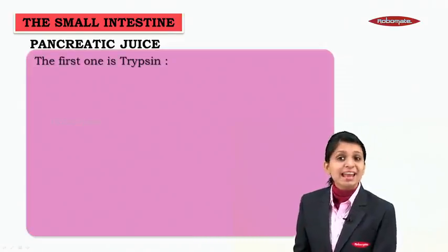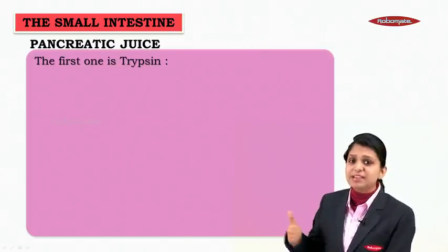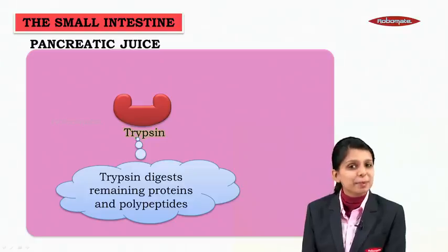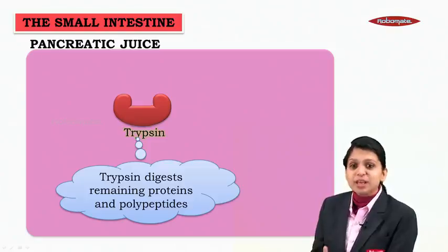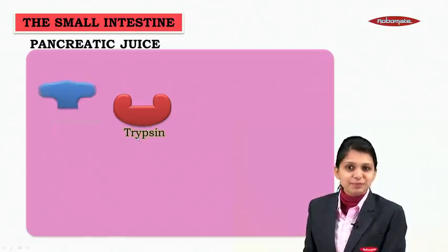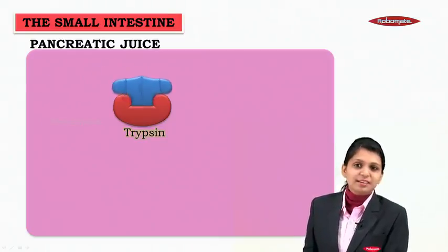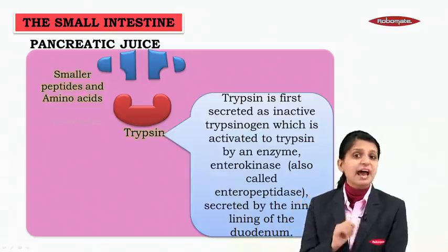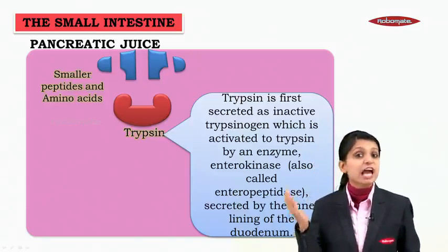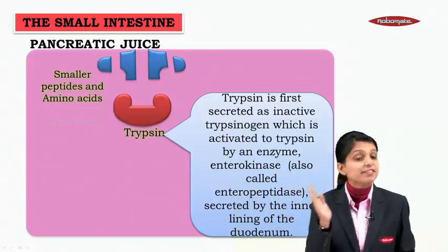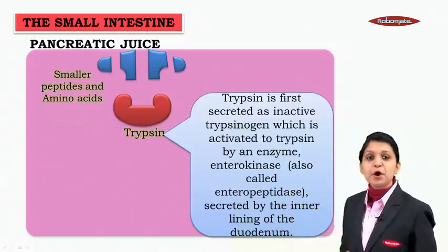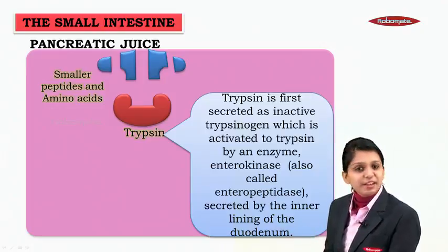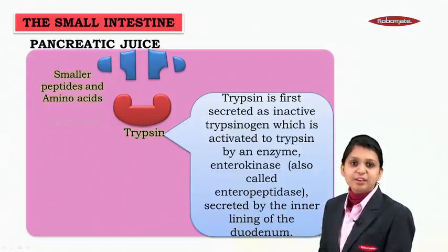Let us understand the enzymes inside the pancreatic juice. The first enzyme is trypsin, which digests the remaining proteins and polypeptides in the food, producing smaller peptides and amino acids. Trypsin is first secreted as an inactive form called trypsinogen, which is activated to trypsin by an enzyme called enterokinase, also called enteropeptidase, secreted by the inner lining of the duodenum.